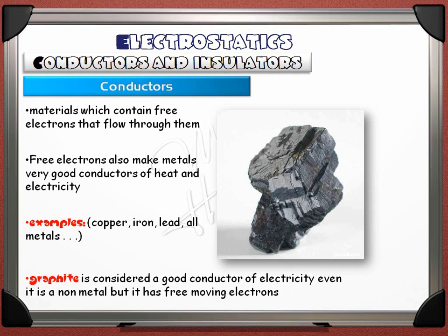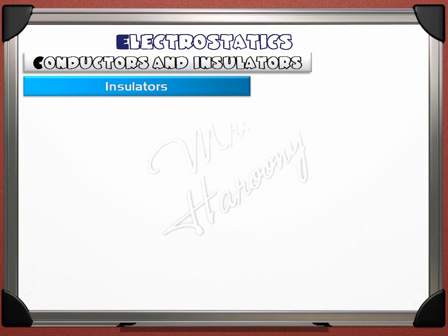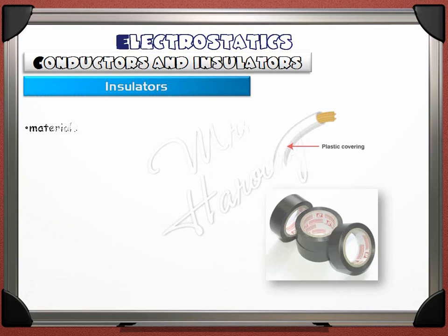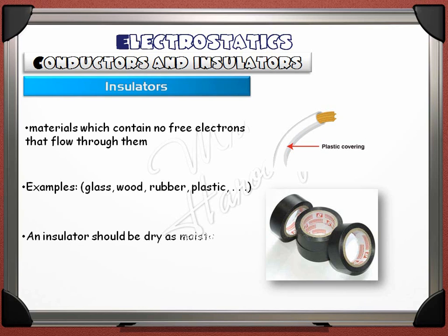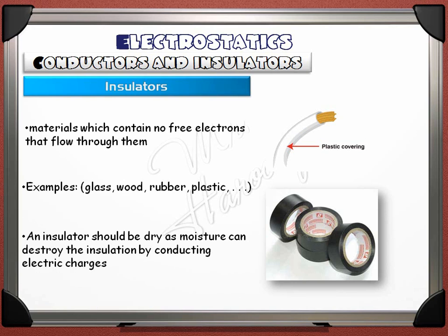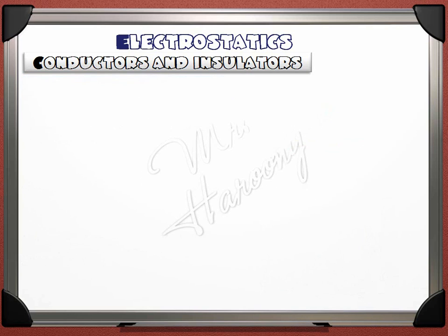Insulators are materials which contain no free electrons that flow through them. Examples: glass, wood, rubber, plastic. An insulator should be dry, as moisture can destroy the insulation by conducting electric charges. These were very short notes about conductors and insulators.